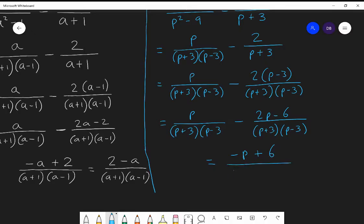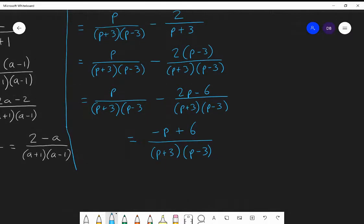And then that simplifies to P take away two P is negative P and take away negative six is positive six over P plus three, P minus three. And the elegant way of writing that is six minus P over P plus three, P minus three.